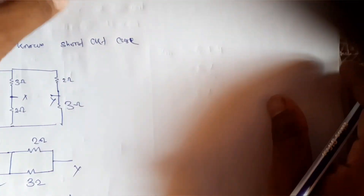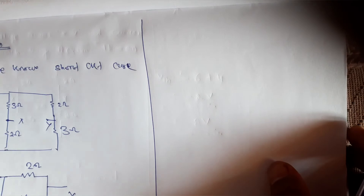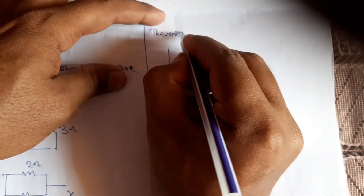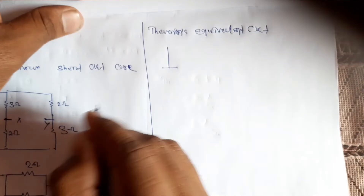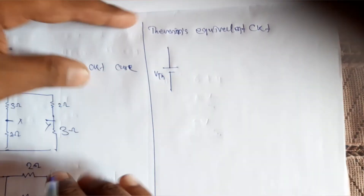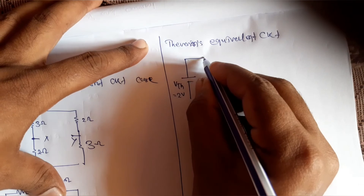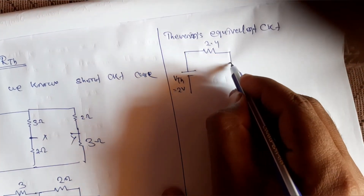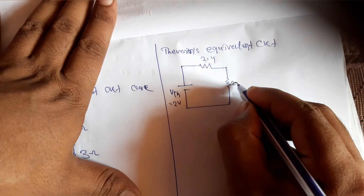Our next objective is to draw the Thevenin equivalent circuit. In the Thevenin equivalent circuit, the Thevenin voltage is in series with the Thevenin resistance. So Vth equals 2 volts and Rth equals 2.4 ohm. The load resistance connected across the xy terminal is 2 ohm.